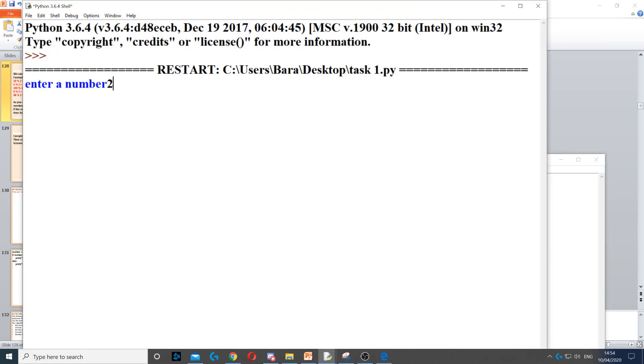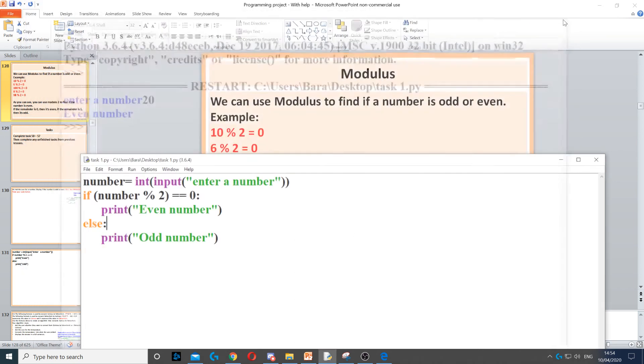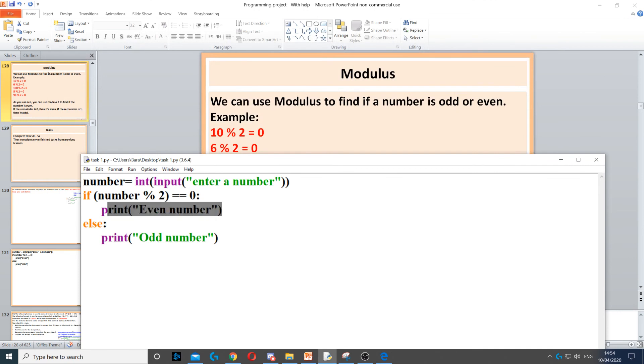For example, if I type, let's say 20, it says even number. Because 20 modulus 2 will give us 0, which means it's an even number.